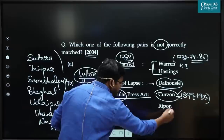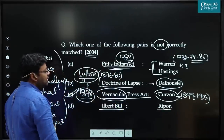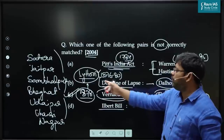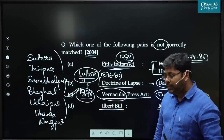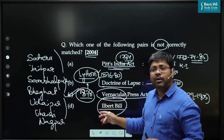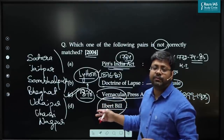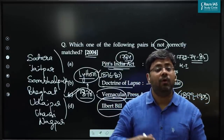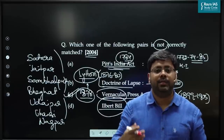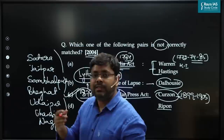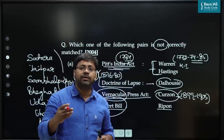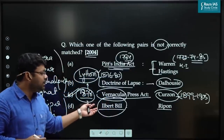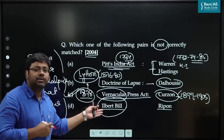The Ilbert Bill controversy in times of Ripon is correct, so that would not be the answer. The answer is C — Vernacular Press Act was brought in times of Lytton. This also illustrates that UPSC will not repeat questions directly, but it will revolve around important themes repeatedly, framing questions in different formats around the same important facts.